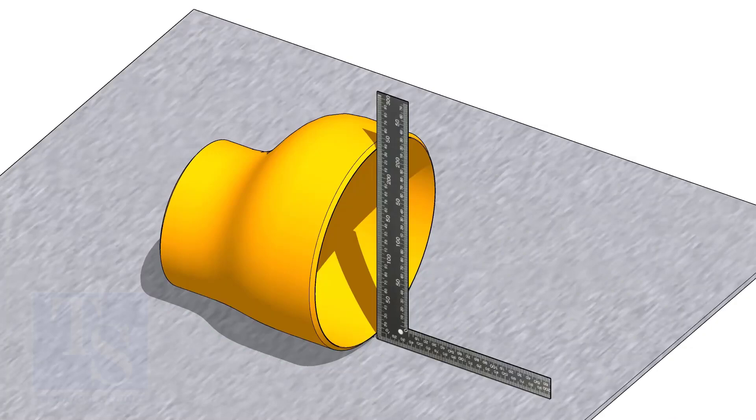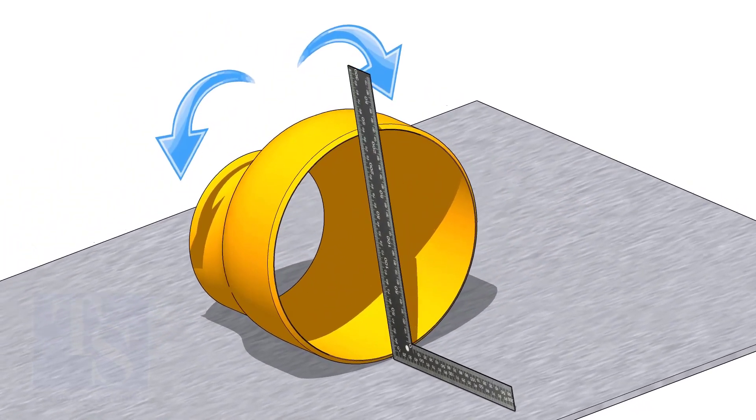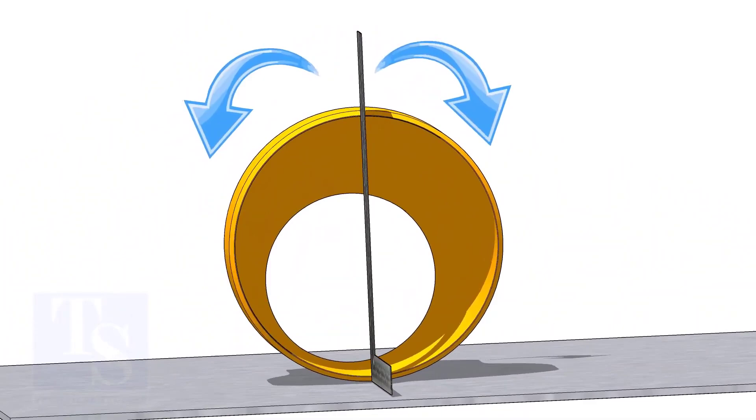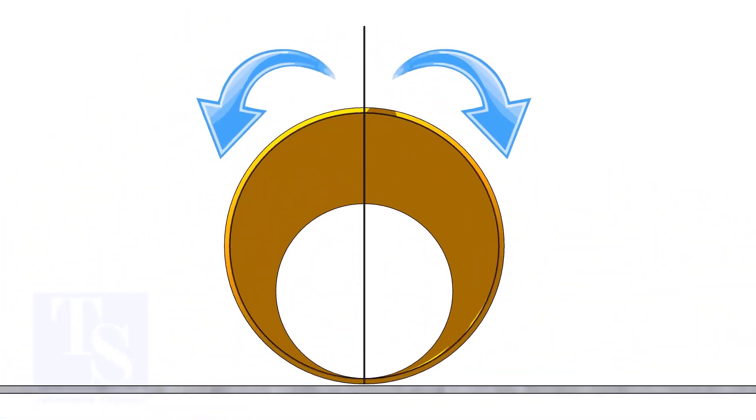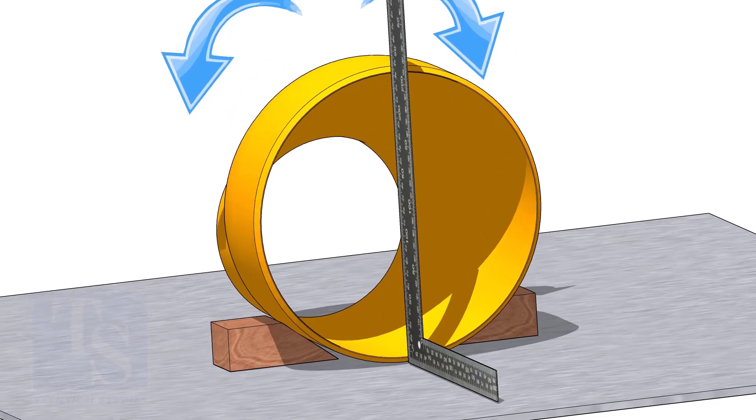Put the reducer on a straight plate. Hold a right angle at the large side of the reducer and gently rotate the reducer back and forth until the face of the reducer is square to the right angle.